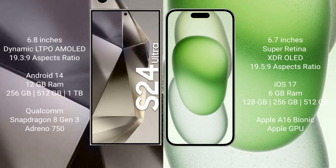The S24 Ultra comes with a 6.8-inch dynamic LTPO AMOLED display and aspect ratio 19.3:9. The iPhone 15 Plus comes with a 6.7-inch Super Retina XDR OLED display and aspect ratio 19.5:9.